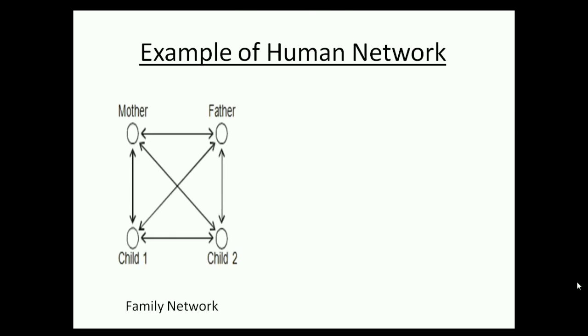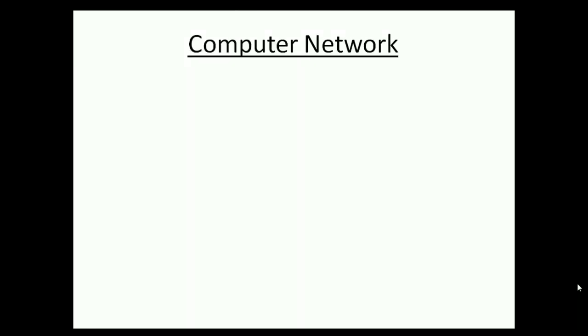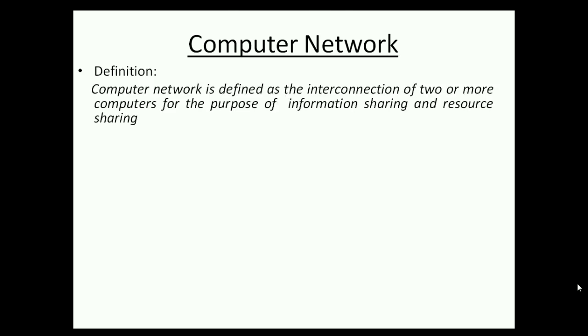Some examples of human networks are the family network and the restaurant network. Up until now we have discussed the networking concept used in our real life. Now we will learn about computer network, which is exactly a similar concept to a human network. In a computer network, computers act as nodes.